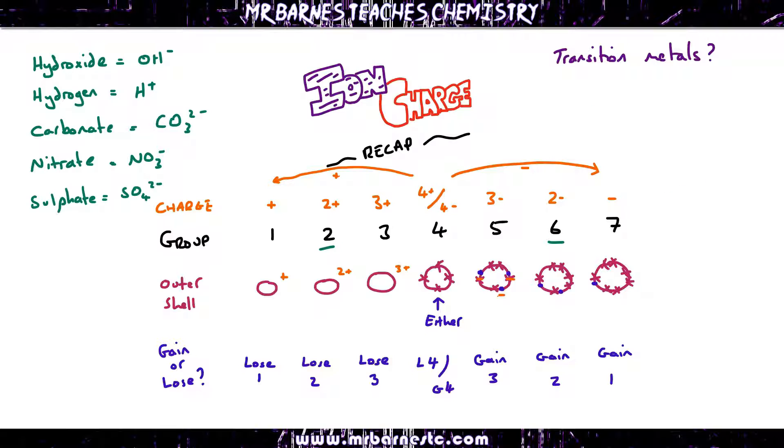You can also work out the charge even if it doesn't give you that. If it gives you the formula, let's say for iron oxide here, Fe2O3, you know oxygen is in group 6, therefore you know it is 2-. The formula tells me we've got 3 oxygens, so that's 3 lots of O 2-, giving me an overall negative charge of 6-. Therefore, my positive charge must be 6+.